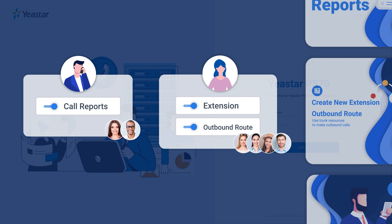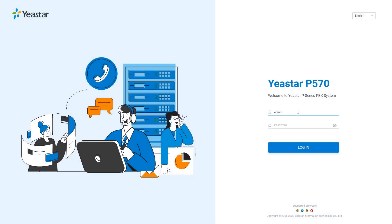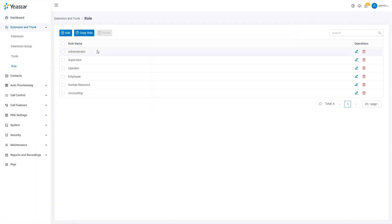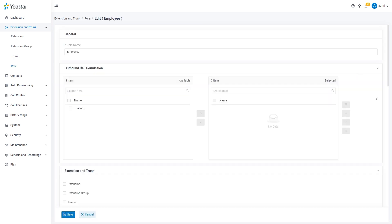With P-Series PBX user role management, we can make such an arrangement with simple mouse clicks. All we need to do is log into the system as the administrator, and we'll be able to find all pre-configured user roles, each with their authorized configurations according to their responsibility.